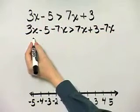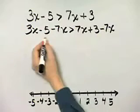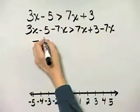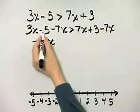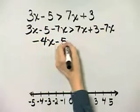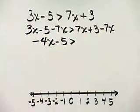Now, what do we have on the left side? 3x minus 7x. That's negative 4x. And then minus 5 is greater than. 7x minus 7x is 0x or 0. And I have 3.